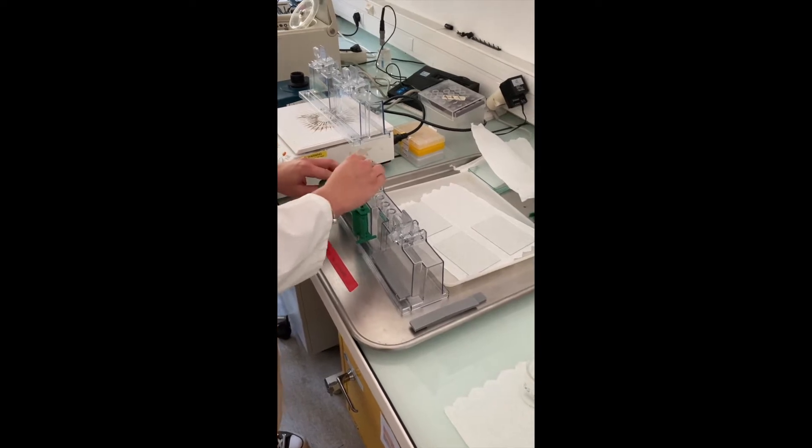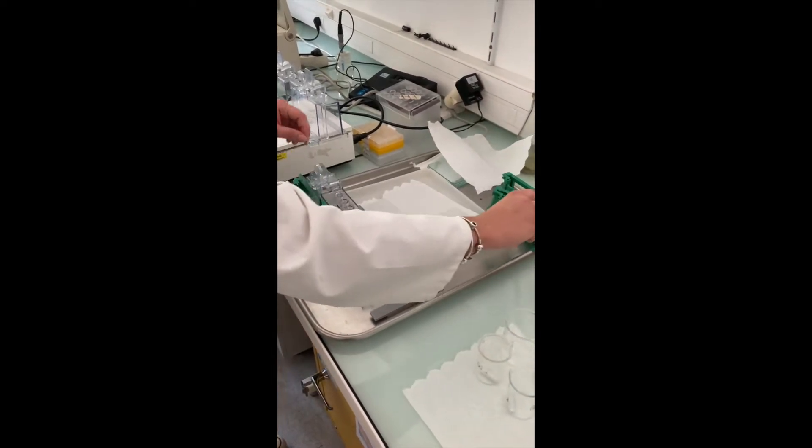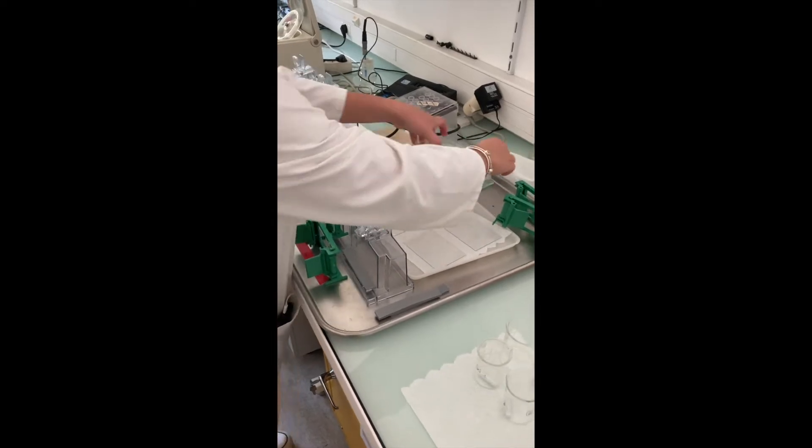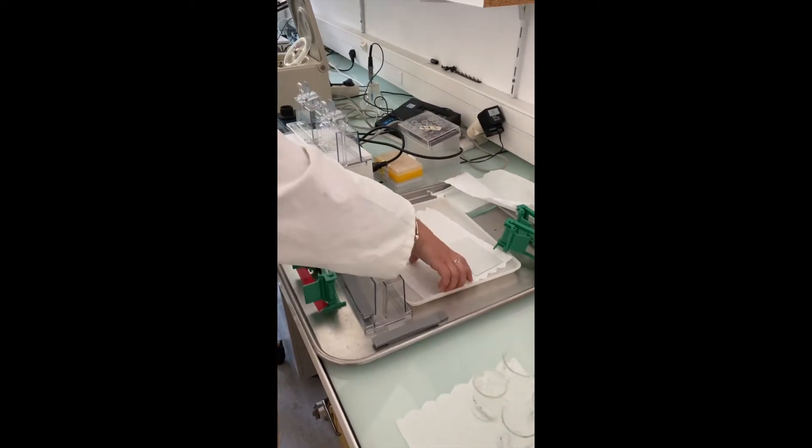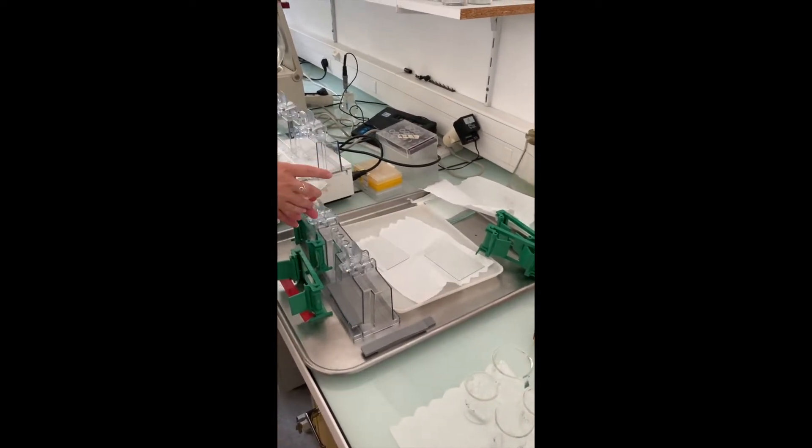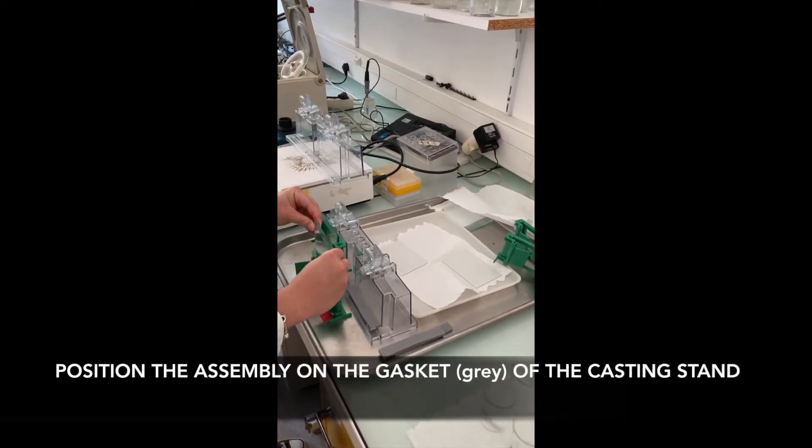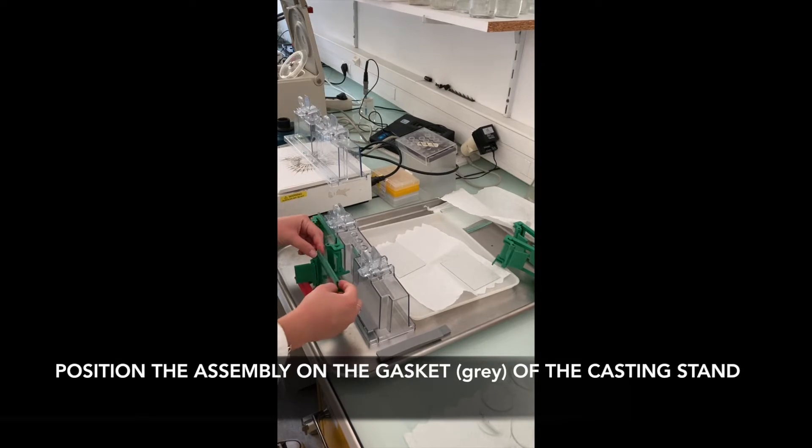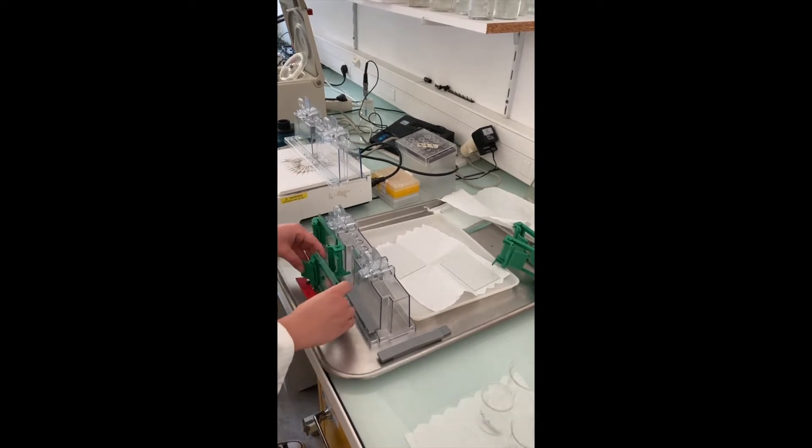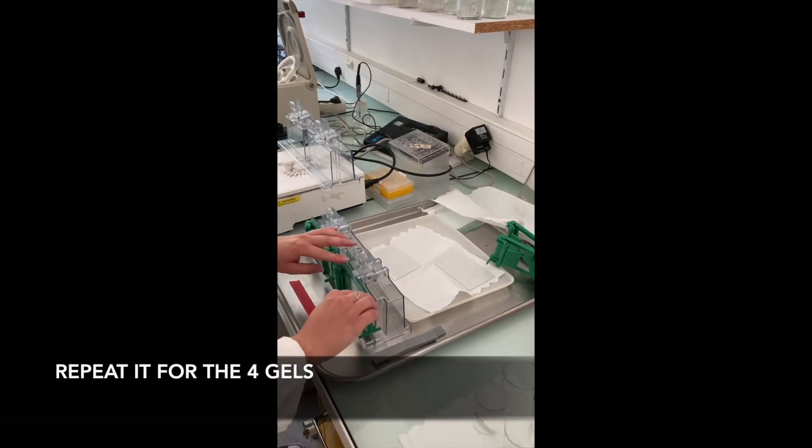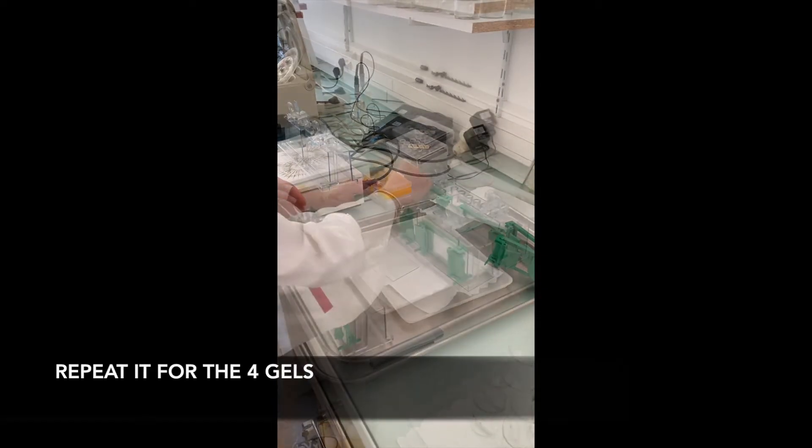Then secure the gel cassette with the casting frame using pressure levers and position this assembly on the gasket of the casting stand and secure it. Repeat the operation for the four gels.